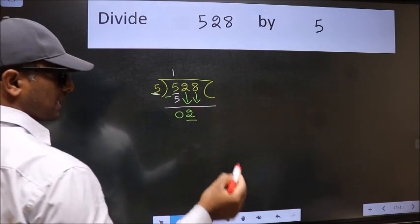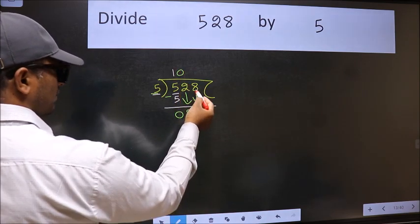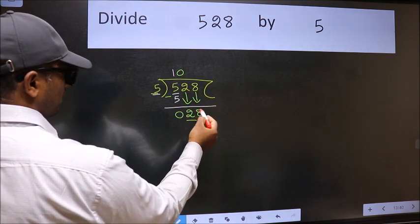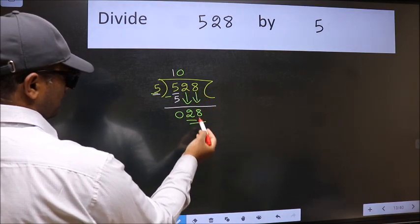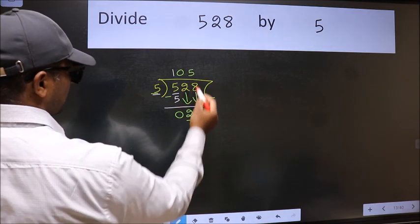And the rule to bring down the second number is we should put 0 here. Then only we can bring this number down. Now 28. A number close to 28 in the 5 table is 5 fives, 25.